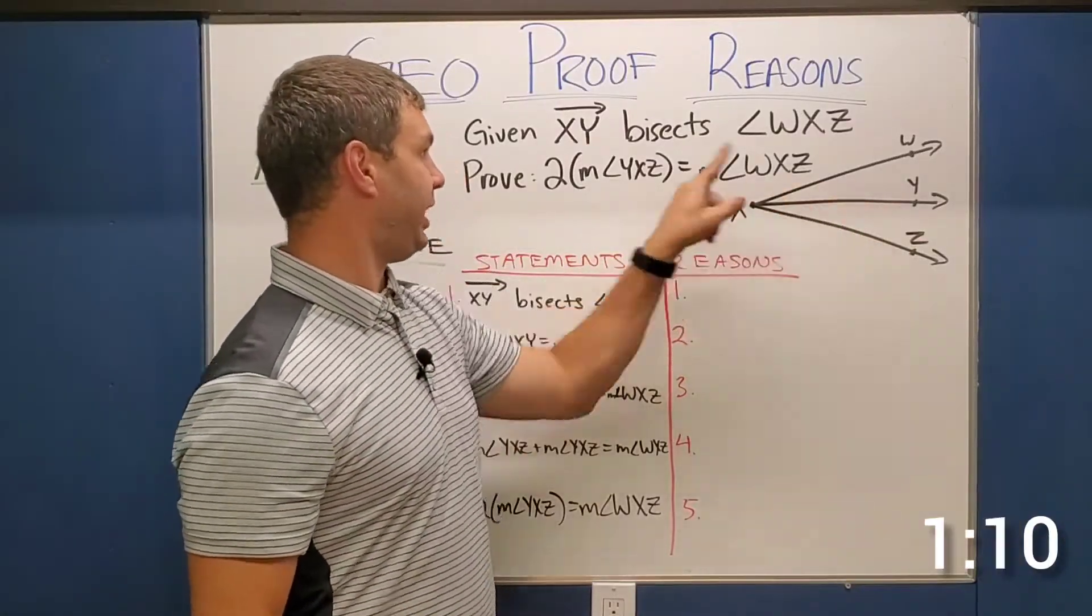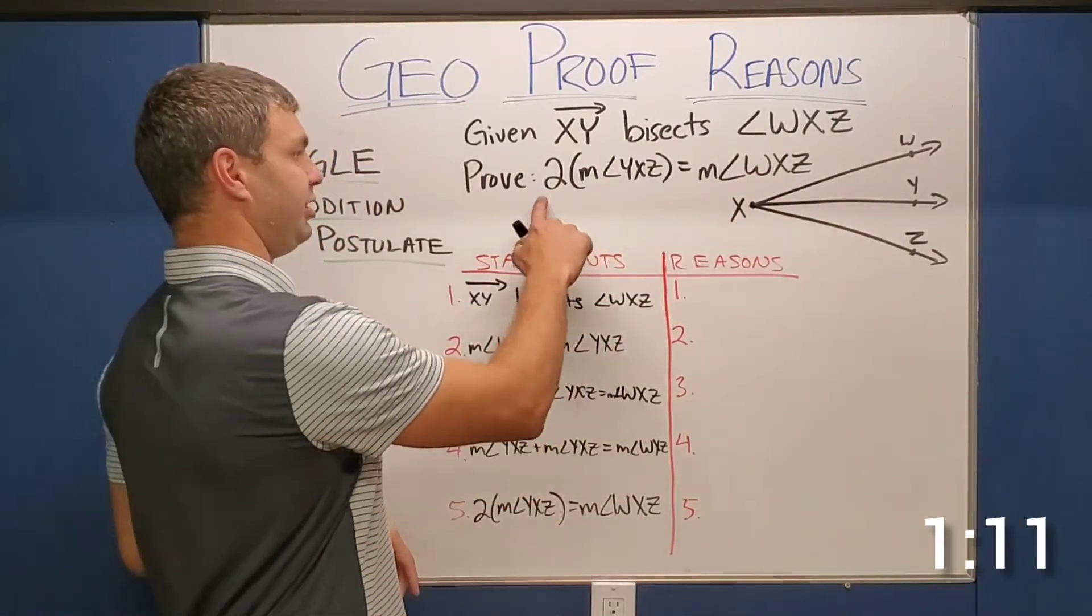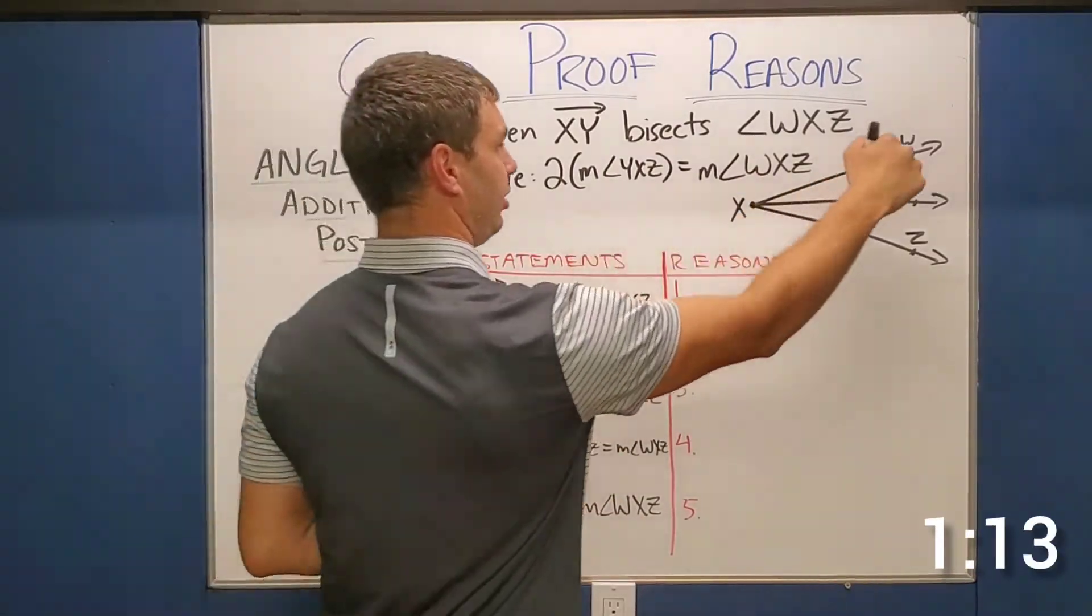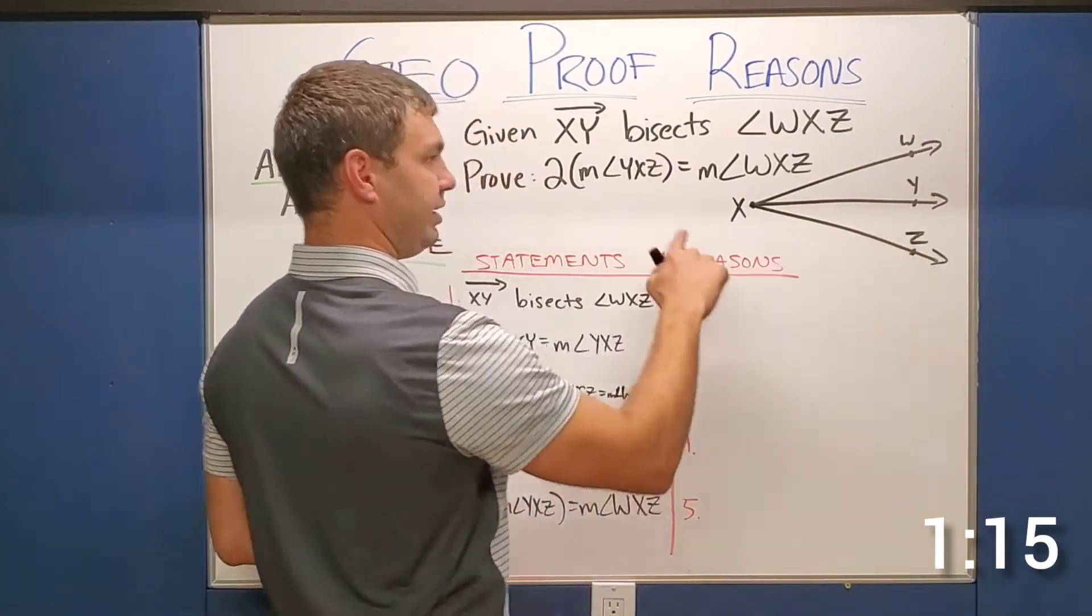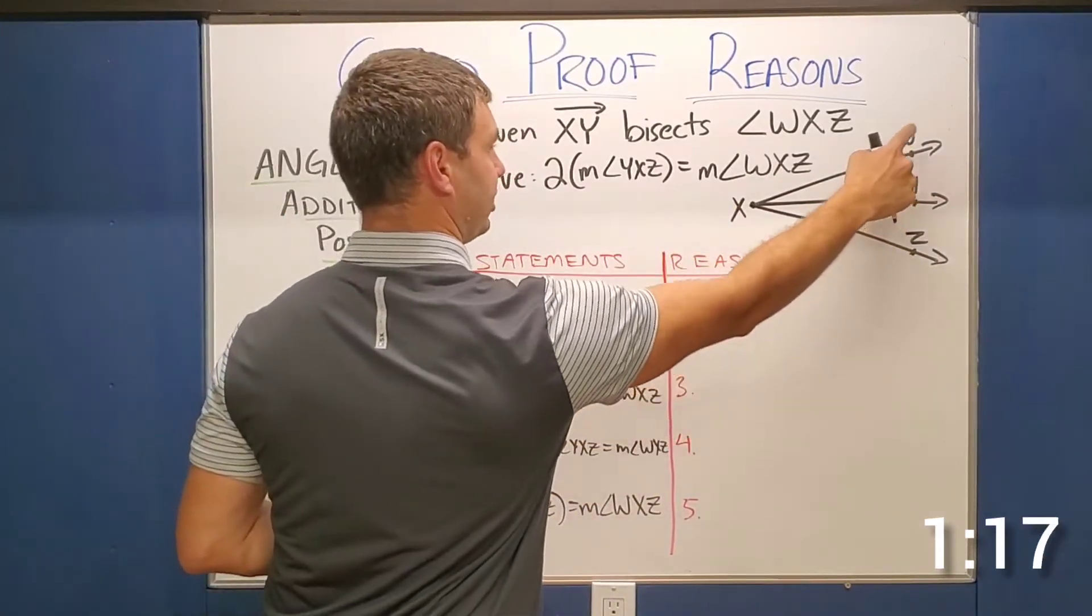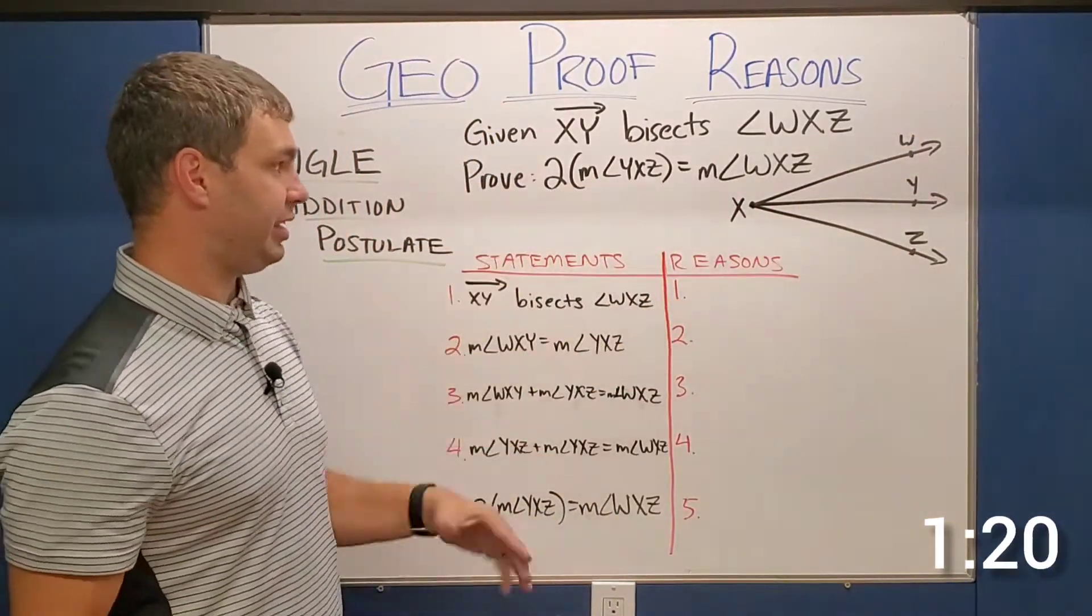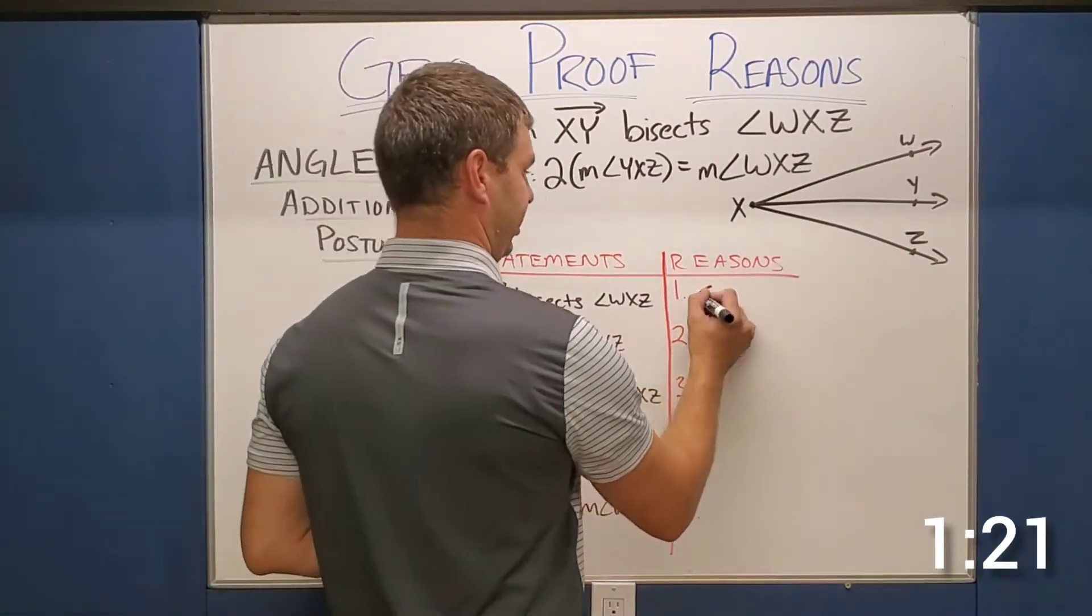Proof two, we have this angle over here that's being bisected as it says in our given and we need to prove that two times angle YXZ equals the entire thing, the measure of WXZ. So first off, it's given us that that's a bisector. So that's gonna be our given.